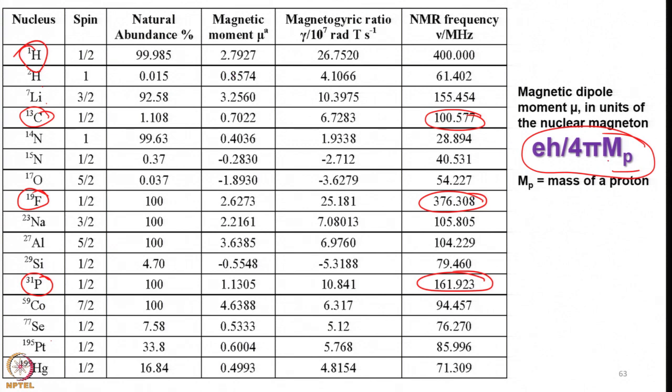If you know the mass of a proton, all other values are constants and you should be able to calculate the relevant frequencies.